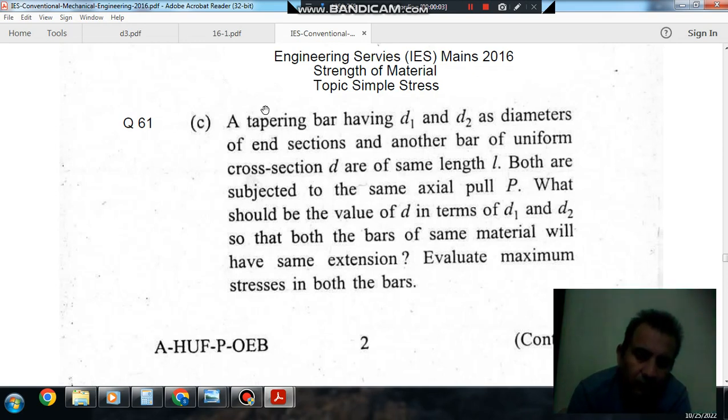Hello, welcome again. We are solving some conventional questions of strength of materials, topic simple stress, question number 61 from Engineering Services Mains 2016. A tapering bar having d1 and d2 as diameters of end sections and another bar of uniform cross-section d are of same length L. Both are subjected to the same axial pull P.